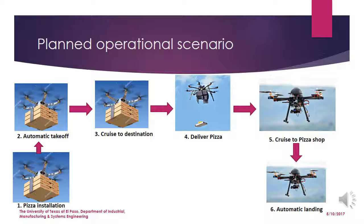This is the operational view of our project. The pizza shop will be receiving orders from customers online, they will prepare the pizza, and when it's ready they will install the pizza inside the box which will be attached at the bottom portion of the drone. The location of the pizza customer will be inserted in the microcontroller and the drone will take off automatically, navigate to the customer's place, deliver the pizza, receive payment, then cruise back to the pizza shop and land automatically, ready for the next delivery.